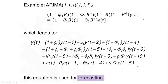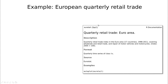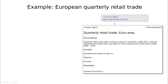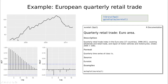Remember that this idea is one way to compress the information of the model. Let me show you another example. This is the database 'euretail', which is included in the fpp2 library. Let's plot the data a little bit.